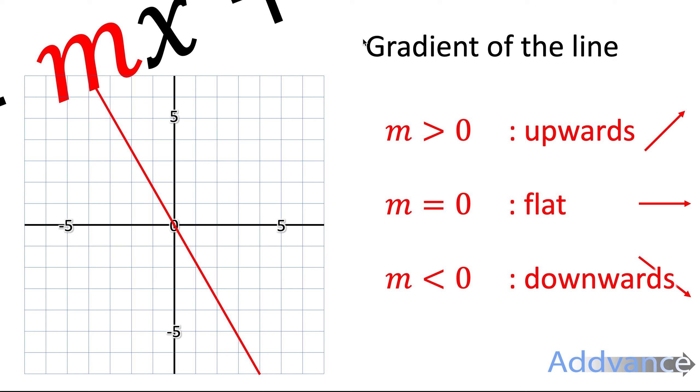The bigger the number is, the more steep it is. So if it's a really big positive number, it will be really steep. If it's a really big negative number, like minus 10, minus 20, it will be really steep going downwards.